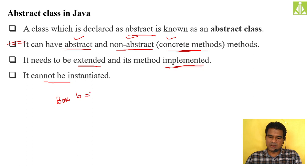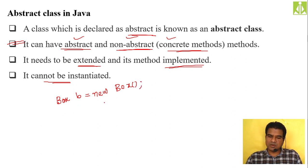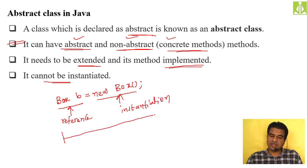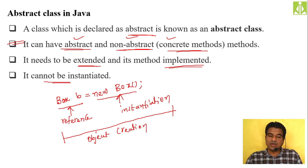For a normal class like box, you write: box b equals new box(). Here 'box b' is the reference, 'new box()' is the instantiation, and together it is object creation. For an abstract class, you can only use it as a reference — you can use it as a reference but cannot instantiate it, meaning you cannot create the object of an abstract class.